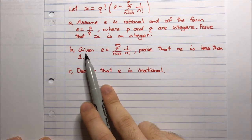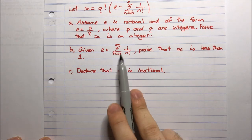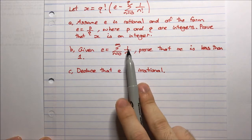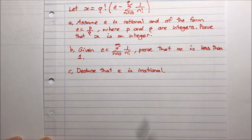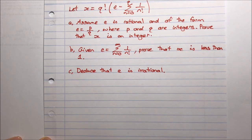Part B: Given that e equals the summation from n equals 0 to infinity of 1 on n factorial, prove that x is less than 1. Part C: Deduce that e is irrational.